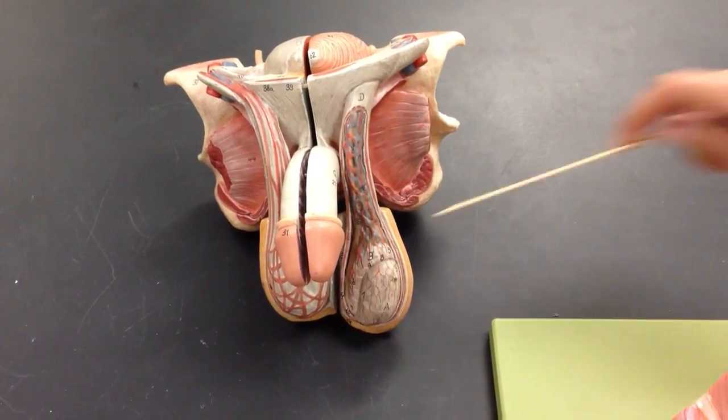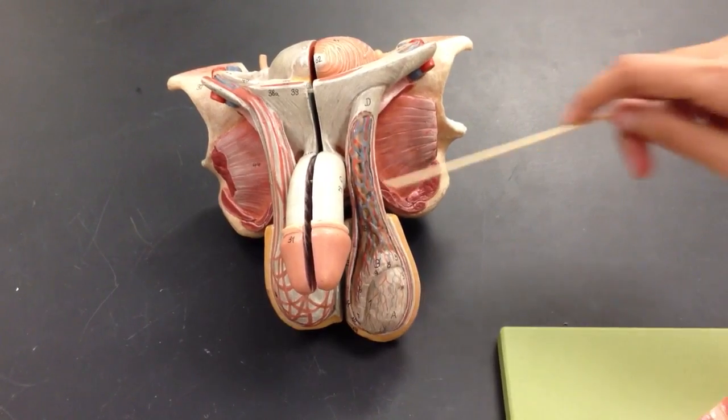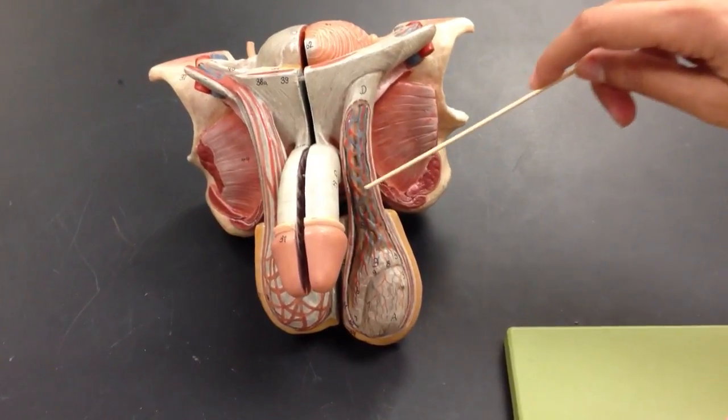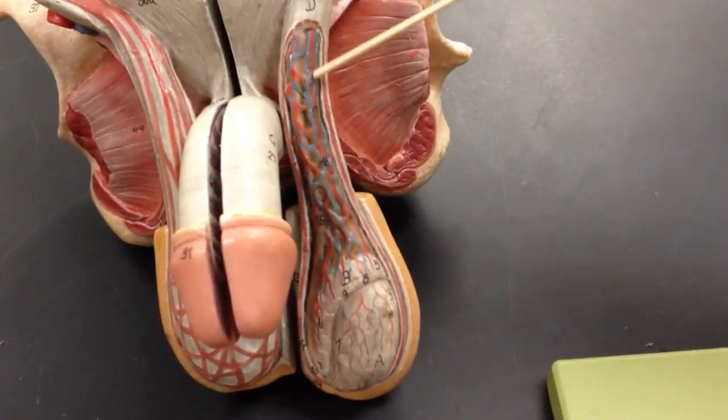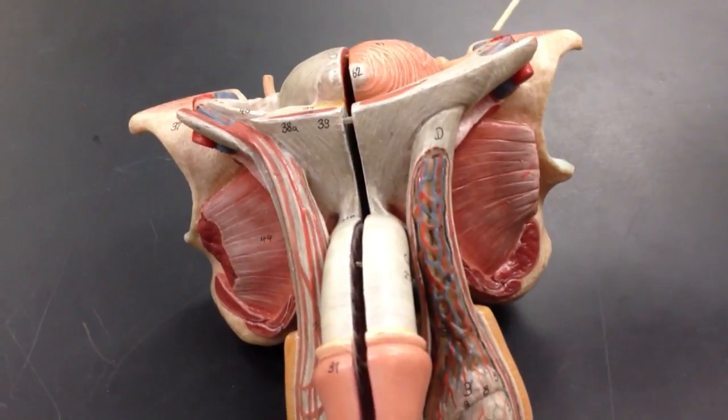Spermatic cord. Testicular artery. Pampiniform plexus is going to be the blue. Vas deferens is right here.